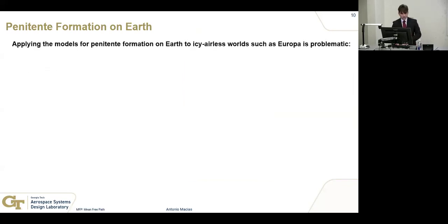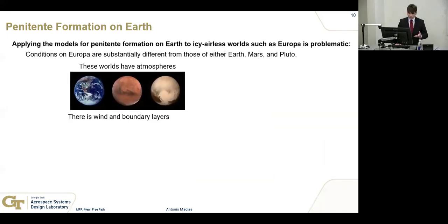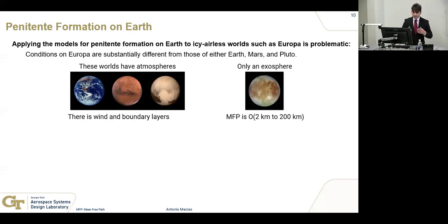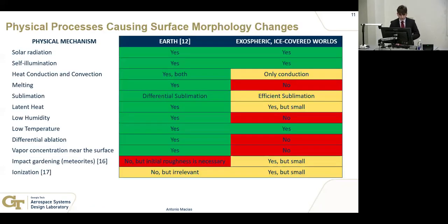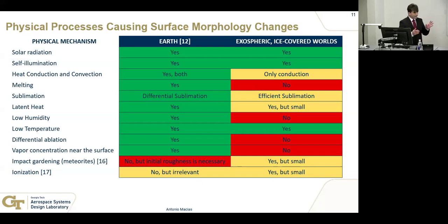Applying Earth models to Europa is really problematic because the conditions are very different. Worlds like Earth, Mars, and Pluto have atmospheres with fluid dynamical phenomena like wind and boundary layers. But worlds like Europa have only an exosphere, where the mean free path between particle collisions is many kilometers. So the models used to study penitentes formation on Earth do not apply to the exosphere-nature of worlds like Europa. Here's a comparison showing many physical mechanisms that play a role in penitente formation on Earth are not present or negligible on Europa.